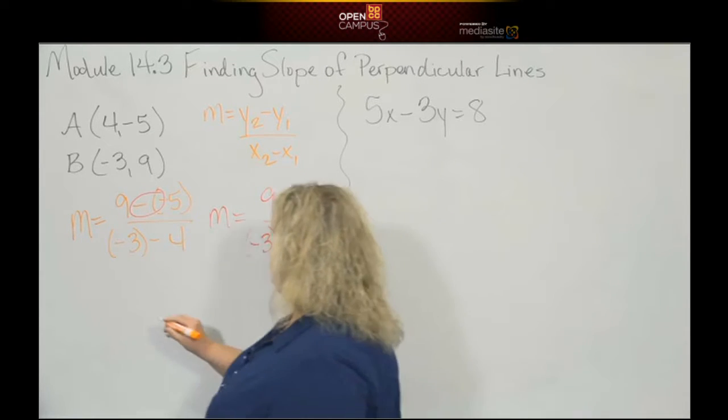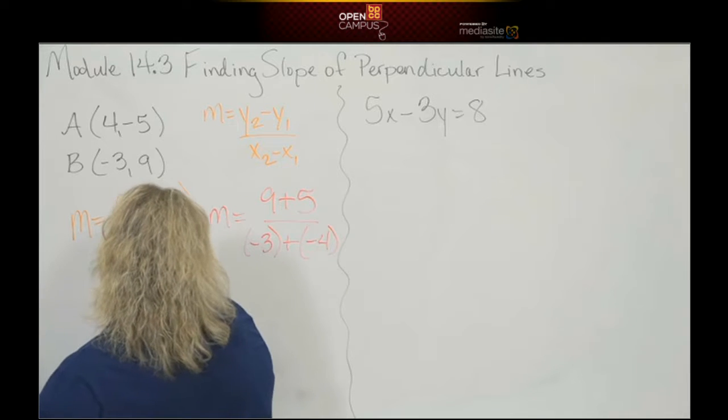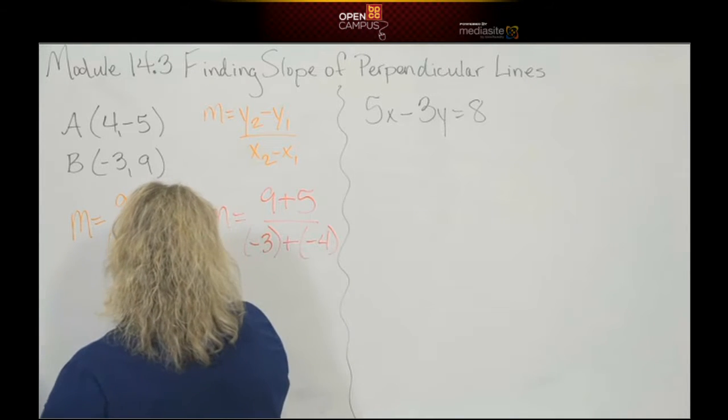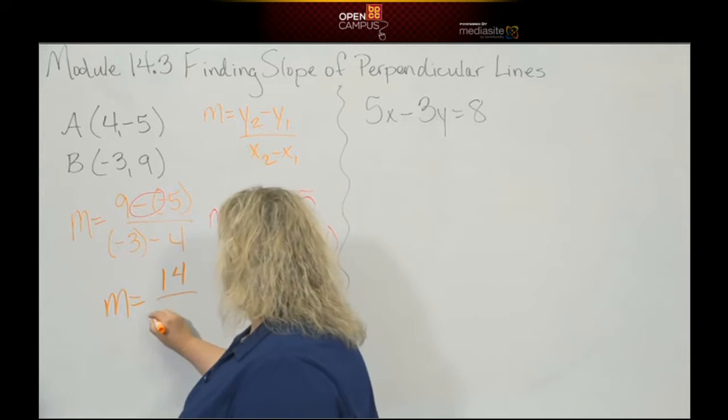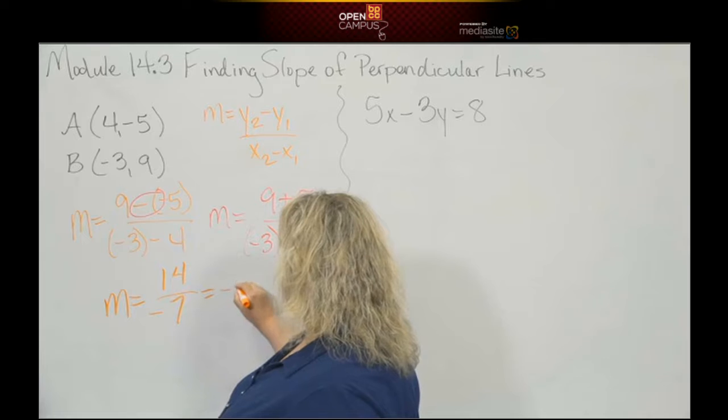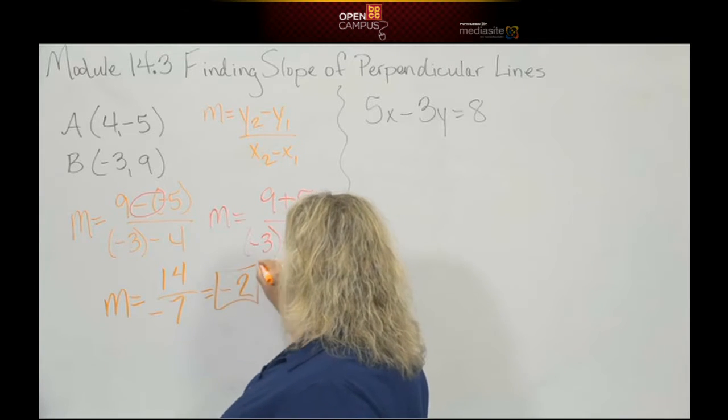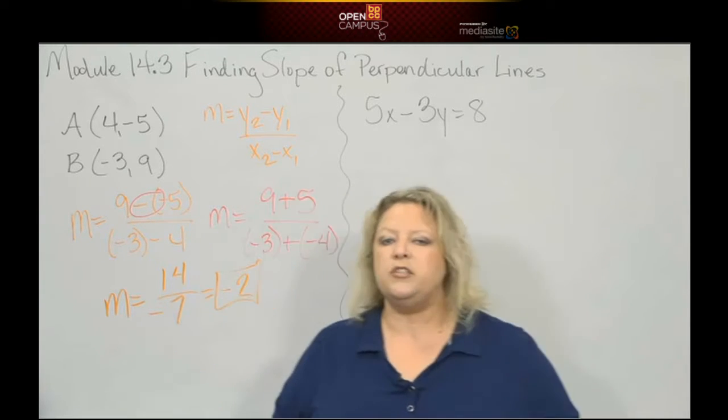Okay, so when I do that, now I can actually work this out. Give me some math. So that would be m is equal to 9 plus 5, which is 14, negative 3 plus negative 4 makes negative 7, which gives me negative 2. Now that's the original slope.